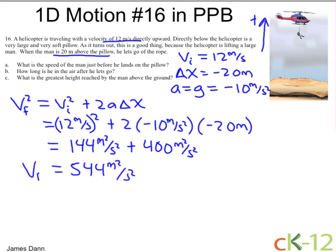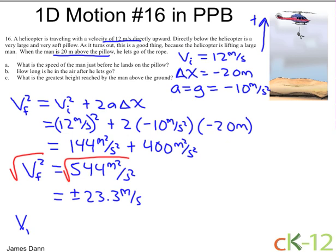Now all that's left to do is take the square root of both sides, and when we do that we get plus or minus 23.3 meters per second. We should be careful — his velocity is downward, so we want to take the minus: negative 23 meters per second.